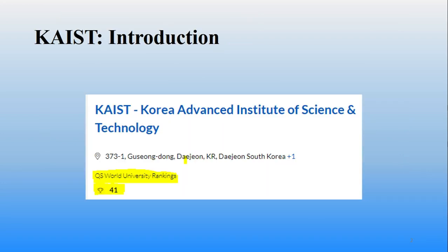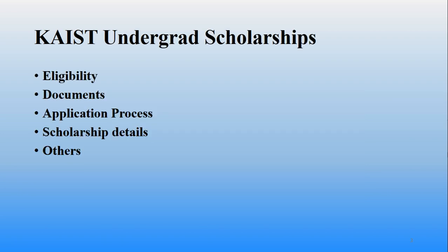The major thing is that KAIST is ranked 41st in QS World Ranking this year. This is a really high ranking — it is the top ranking in Korea. We have only one university above this, so KAIST is one of the two top universities in South Korea, and globally it is ranked 41st. You can imagine the standard of this institute.